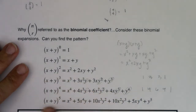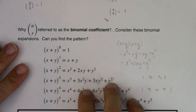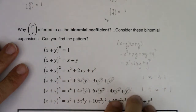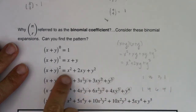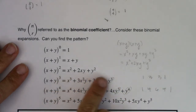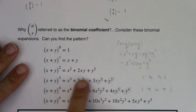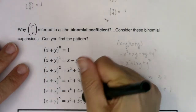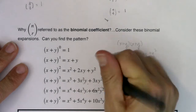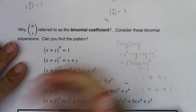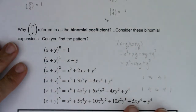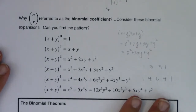So we can start to expand any binomial without doing all of the foiling when we use these binomial coefficients and the fact that the powers on the first term x are descending and the powers on the second term y are ascending. And that, in its entirety, is the binomial theorem.